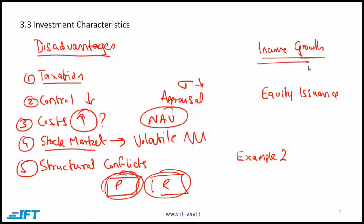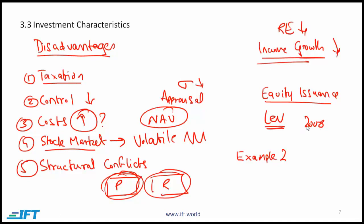The next point has to do with income growth. Given that the level of retained earnings is low, income growth is going to be low — all the earnings from properties flow to the shareholders, so retained earnings and income growth are both low. The last point has to do with equity issuance at disadvantageous prices. REITs often use financial leverage, and if leverage has not been used properly it becomes difficult to raise money in the debt market. In situations like the 2008 financial crisis, debt financing is limited, forcing a REIT into equity financing which might not occur at suitable prices.